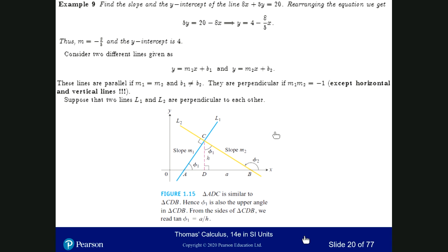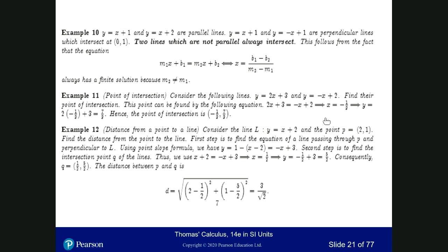It's obvious from this figure that two perpendicular lines have slopes whose product is minus 1. And if lines are not parallel and are different lines, they must intersect. For example, y equals x plus 1 and y equals x plus 2 are parallel lines because both slopes are 1. But y equals x plus 1 and y equals minus x plus 1 are perpendicular lines because the product of their slopes is minus 1.